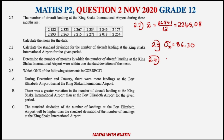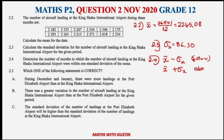Question 2.4: determine the number of months in which the number of aircrafts landing at King Shaka International Airport fell within one standard deviation of the mean. This means we need to find the interval one standard deviation below the mean and one standard deviation above the mean.